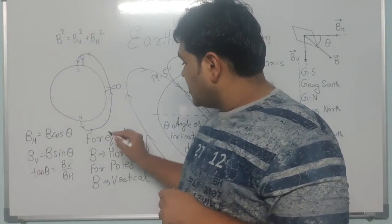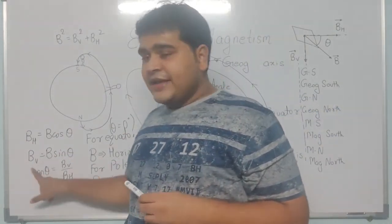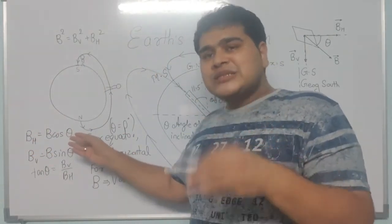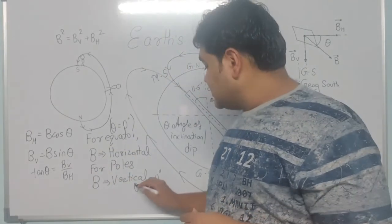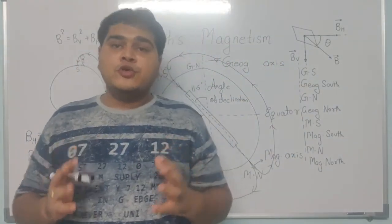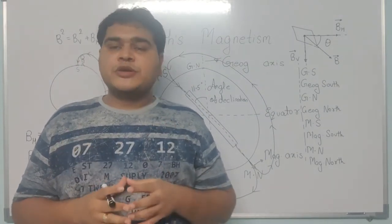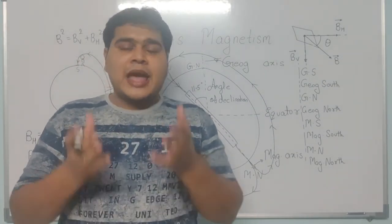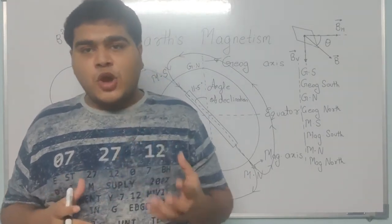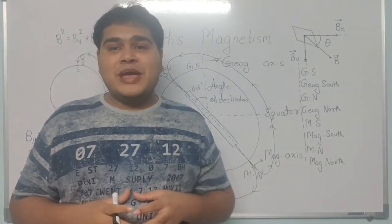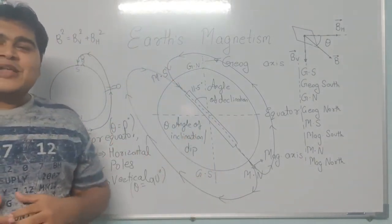When the dip magnetic needle is placed at the equator, it aligns completely horizontal, confirming theta equals 0 degrees and B equals BH. At the poles, the field is only vertical, so BH = 0, meaning cos θ = 0, giving theta equals 90 degrees. This is a very important concept with all terms and formulas that you will use multiple times in MCQs and numericals. If you like this video, please hit the like button, subscribe to our channel, and write in the comment section if you want any specific physics topic covered.